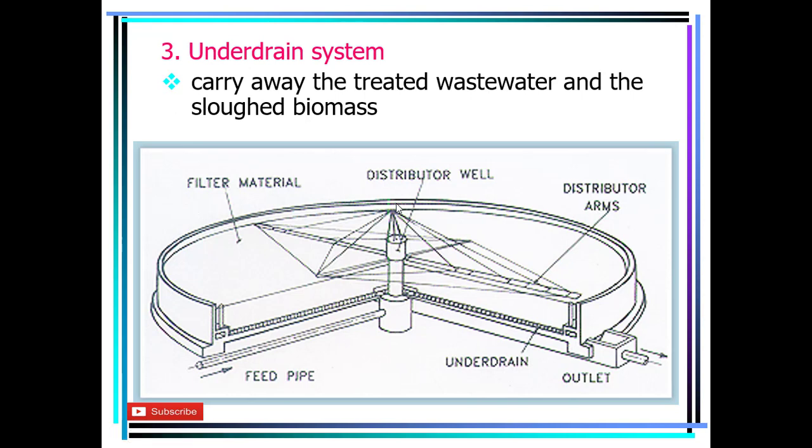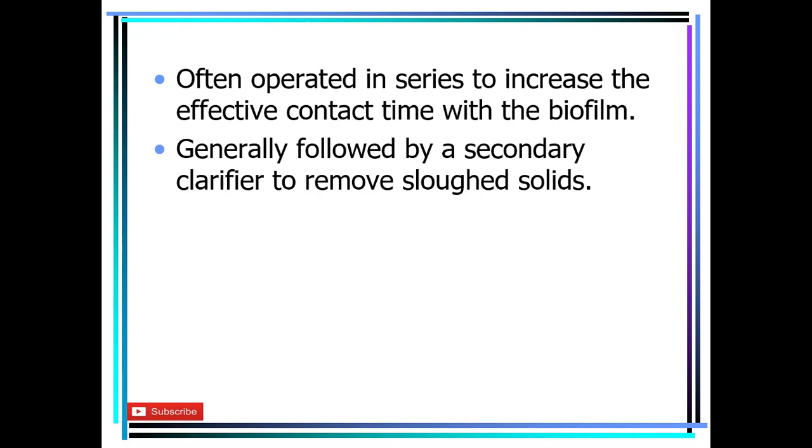The third component is the under drain system, which carries and disposes of the treated wastewater and also the sloughed biomass. These are the three main components of the trickling filter.